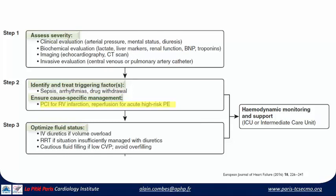Is it myocardial infarction with RV involvement? These patients should be directed to the cath lab for early PCI, or get very rapid reperfusion in the case of massive pulmonary embolism. Fluids should be optimized — in some situations you might remove fluid, while in severe acute myocardial infarction or pulmonary embolism you might give a little fluid. All these patients should be managed in the ICU with close monitoring.